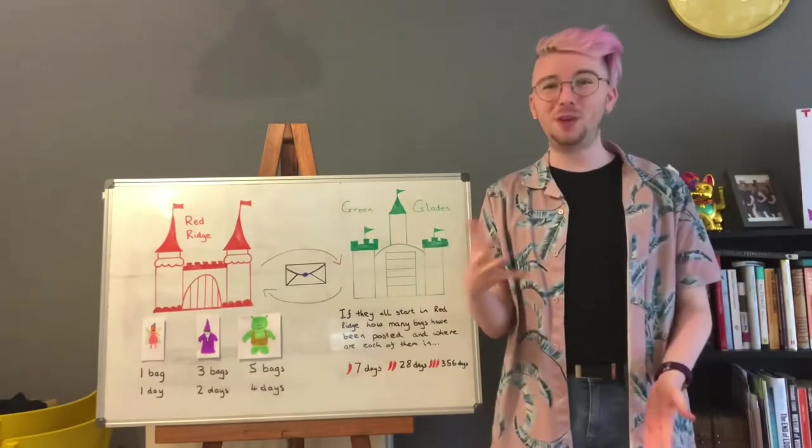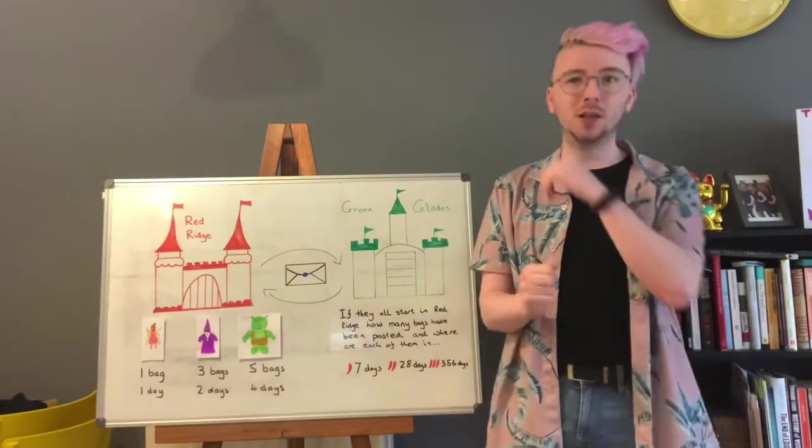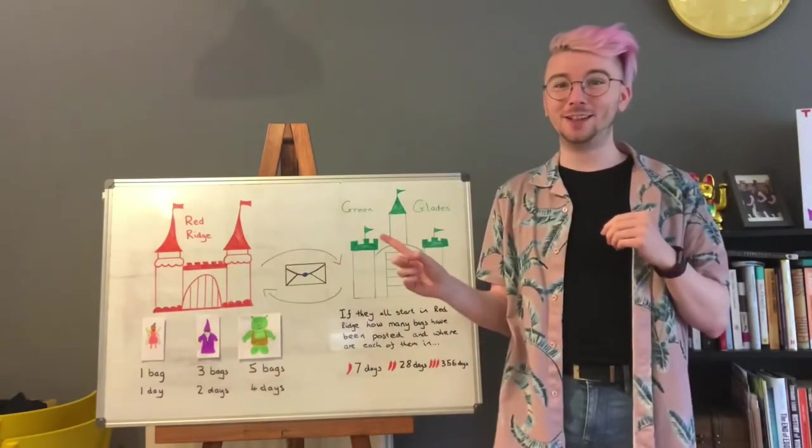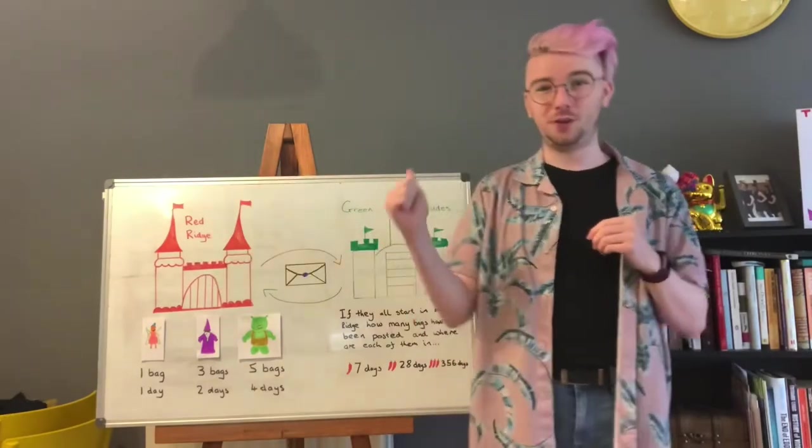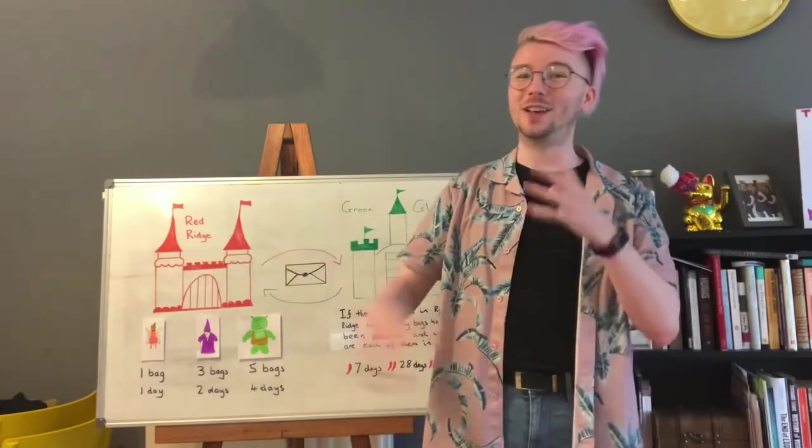The other half, we have to figure out where each of the characters actually are. So in one trip each of our characters will be in Greenglades. In two trips each of our characters will be in Redridge. Three trips Greenglades, four trips Redridge and so on.